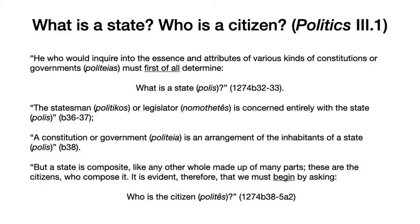A constitution or government — a politeia — is an arrangement of the inhabitants of a state or polis. But Aristotle points out a state is a composite, like any other whole made up of many parts. These are the citizens who compose it. It's evident, then, that we must begin by asking who is the citizen, or polites. So the fundamental way that the state will be defined depends on how the citizen or polites is defined.